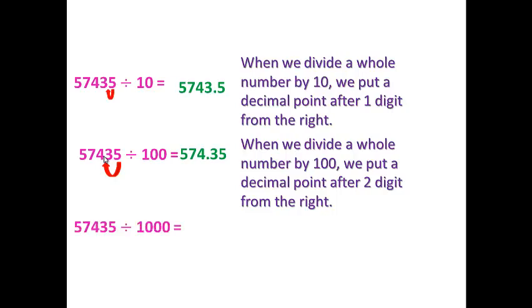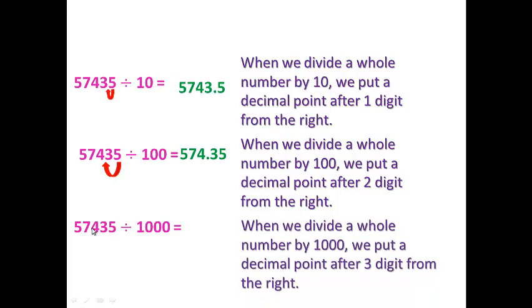For 57,435 divided by 1000, we move back 3 steps. Start from the ones place and count 3 steps back: 1, 2, 3. The point will be between 7 and 4.